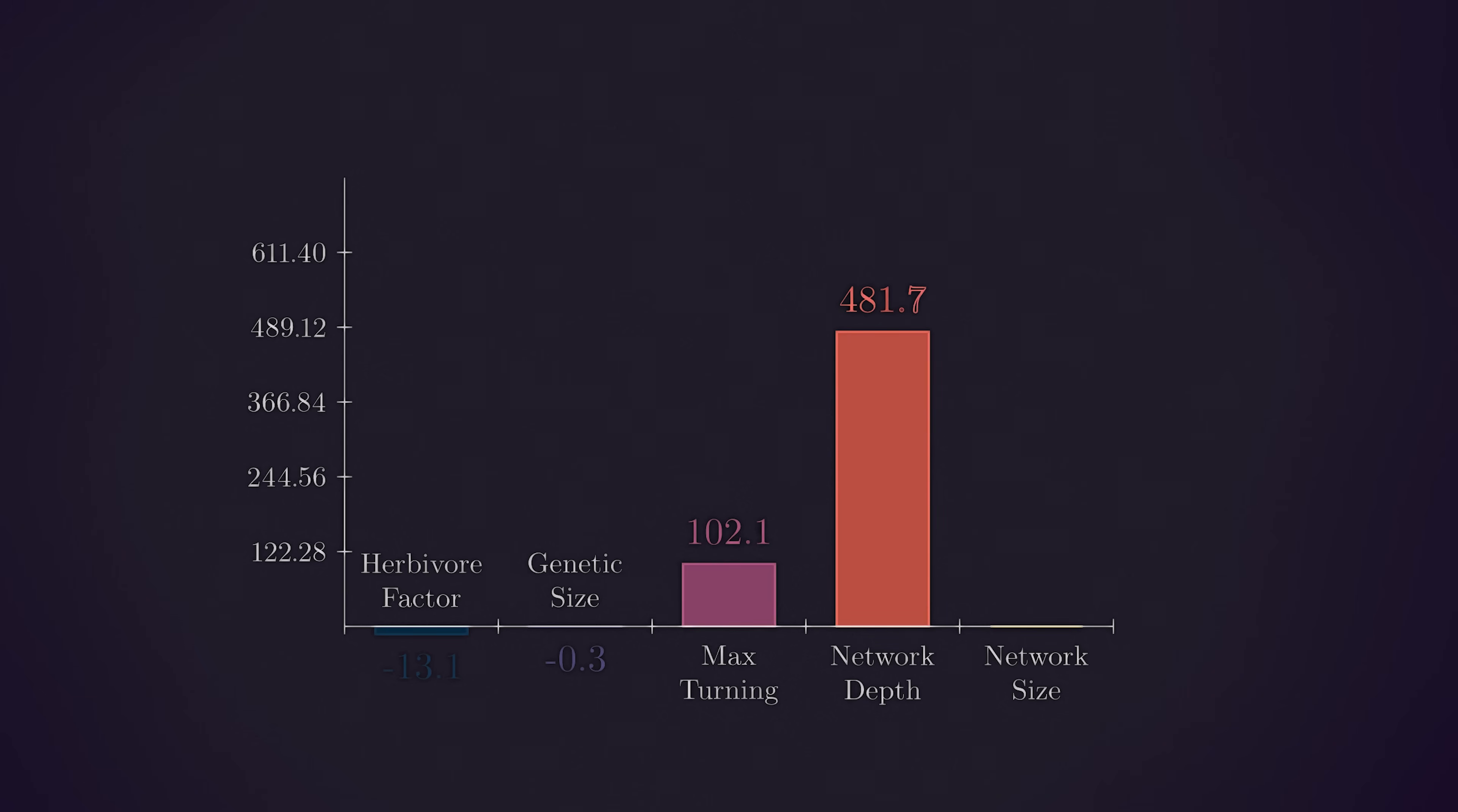Finally, we have network depth and network size. These both grew throughout the simulation the most. We see the network size outstrip depth, which corresponds to adding more neurons in parallel rather than its sequence. This could perhaps be due to how adding sequential neurons increases the time between inputs and actions. In effect, the protozoa has slower reflexes.